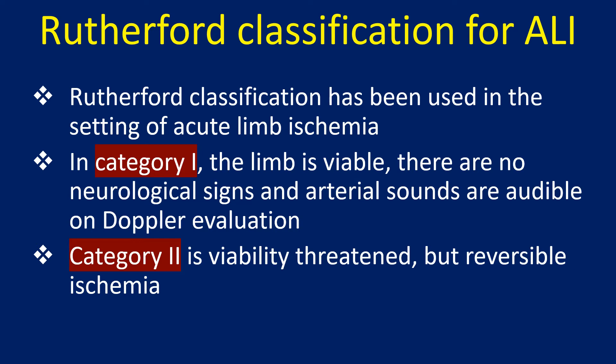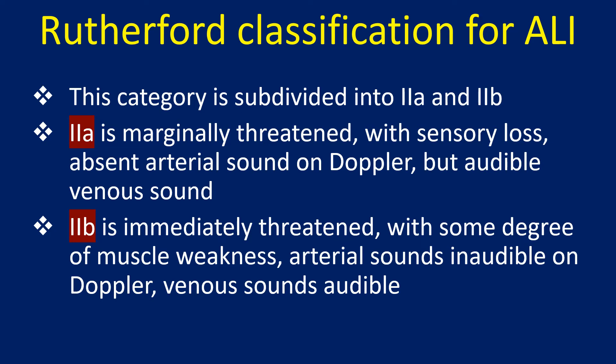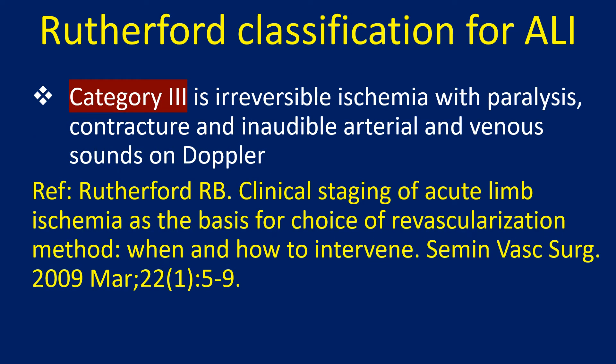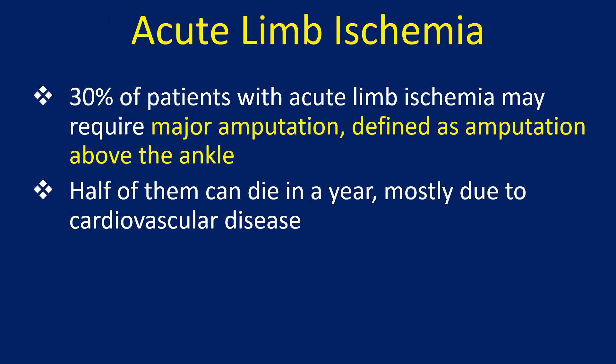Category 2 is viability threatened but reversible ischemia, subdivided into 2A and 2B. Category 2A is marginally threatened with sensory loss, absent arterial sounds inaudible on Doppler, and venous sounds audible. Category 3 is irreversible ischemia with paralysis, contracture, and inaudible arterial and venous sounds on Doppler.